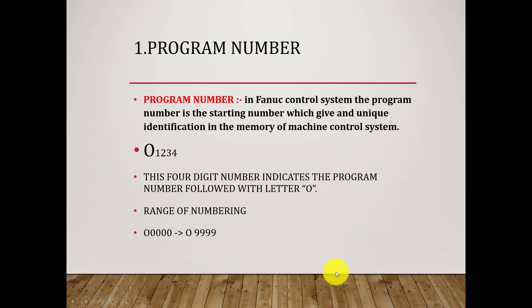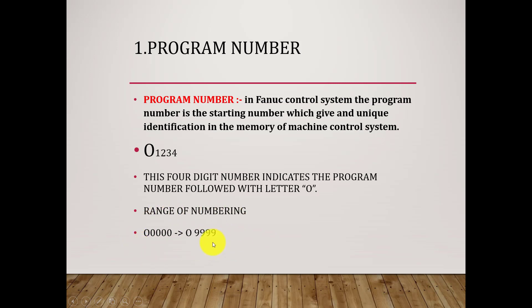The first term used in CNC programming is program number. In FANUC control systems, the program number is the starting number which gives the unique identification in the memory of the machine control system. This four-digit number indicates the program number, followed by the letter O. The range is 0000 to 9999 — this is the range in which the program number can be stored in a machine.